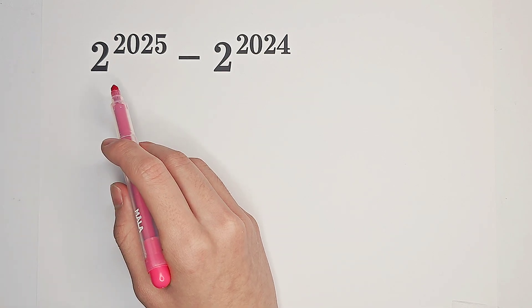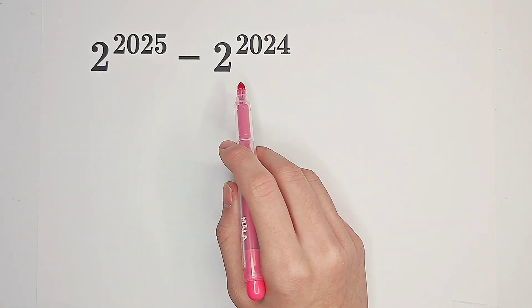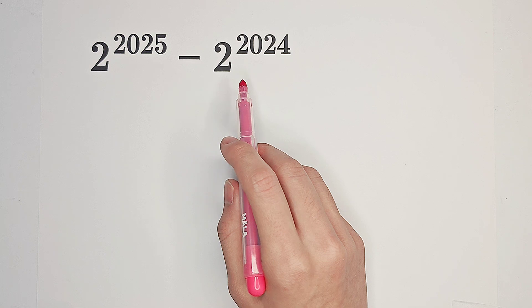Calculate 2 to the power of 2025 minus 2 to the power of 2024. Hmm, easy.